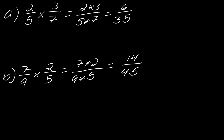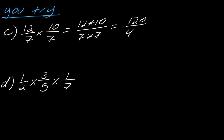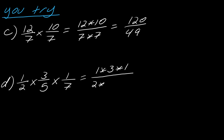Pause the video and try examples C and D on your own. For C, just because they have the same denominator doesn't change anything — we still multiply everything straight across and get 120 over 49. That's an improper fraction but that's fine. For D, with three fractions: 1 times 3 times 1 on top is 3, and 2 times 5 times 7 on the bottom is 70, giving us 3 over 70.